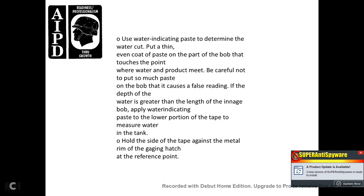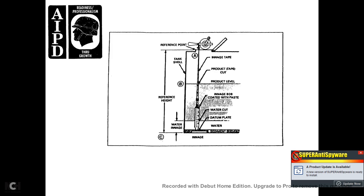47. Follow these steps to measure the height of bottom sediment and water. 48. Use water indicating paste to determine the water. Apply a thin, even coat of paste on the part of the bob that will touch the point where the water and product meet. Be careful not to apply too much paste, as it can cause a false reading. 49. If the depth of the water is greater than the length of the inch bob, apply the water indicating paste to the lower portion of the tape as well. Hold the side of the tape against the metal rim of the gauging hatch at the reference point.